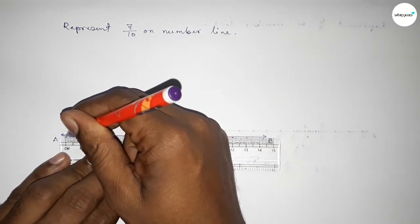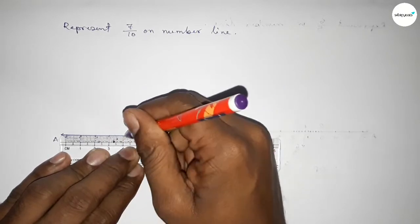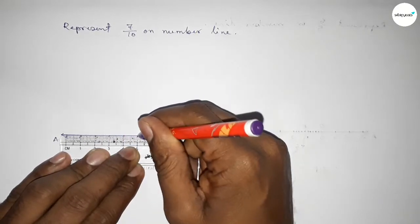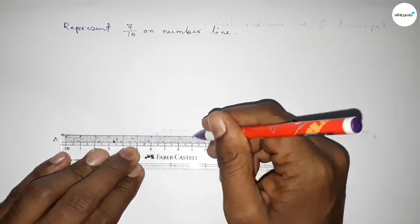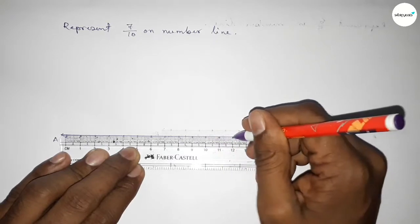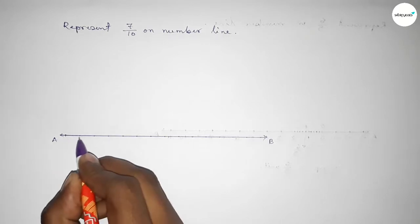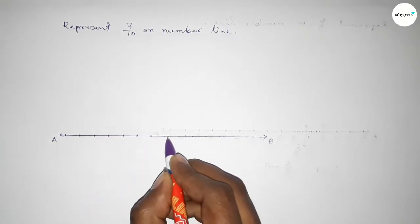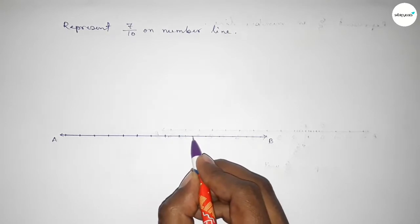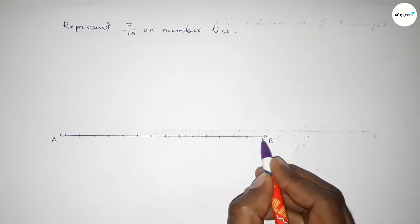Next, we have to mark the numbers on the line by using scale. So first marking the numbers on the line with a deep color to understand perfectly.